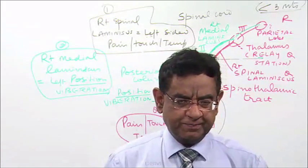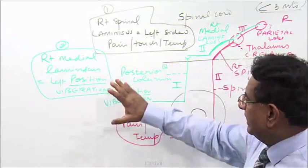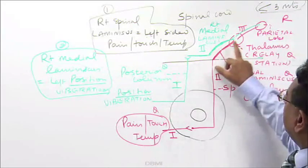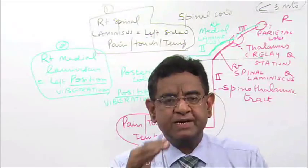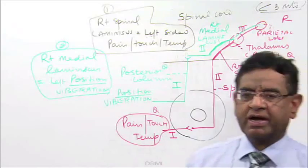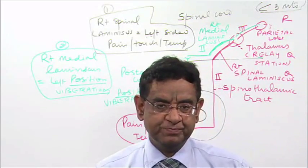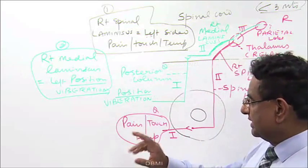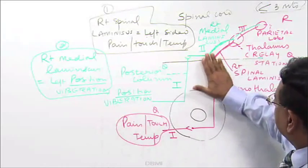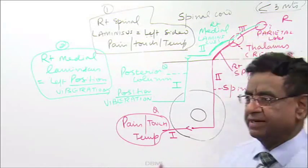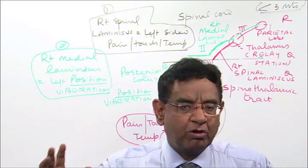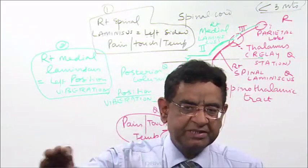Now let us go further. Look at the board once again. All fibers — pain, temperature, position, vibration — have all come to the contralateral thalamus, and ultimately all have gone to the contralateral parietal lobe. All sensations from the left side have ultimately gone to the relay station on the right side, that is, the right thalamus. The thalamus contains all contralateral sensory information.